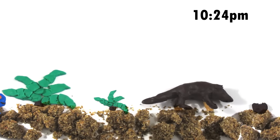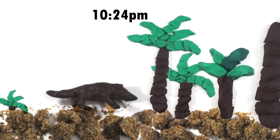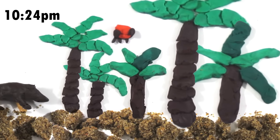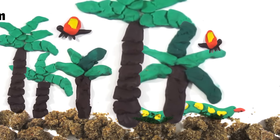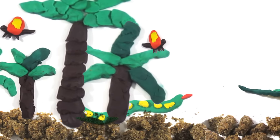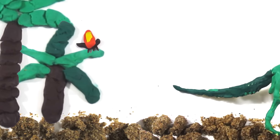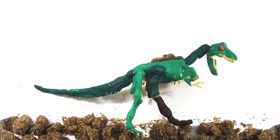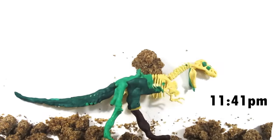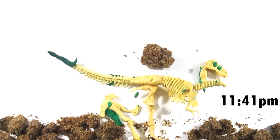By 10:24, the Earth is covered in carboniferous forests, and the first winged insects appear. Many reptiles dominate the land with less than an hour left, but a mass extinction event allows dinosaurs to storm the scene and remain until 11:41 p.m., when they too suddenly vanish.